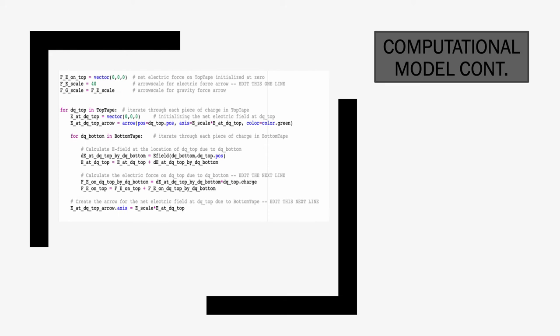This slide is a continuation of the code, which shows how the electric field and force was calculated from the line of charge at tape B.